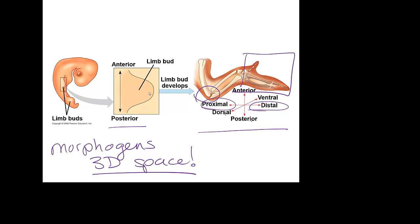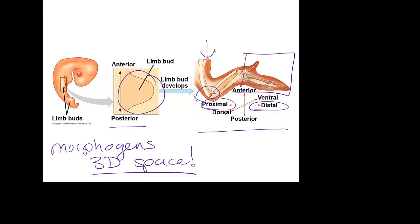What Sonic Hedgehog is going to focus on is actually this limb bud. Like in plants, we actually develop buds, where high concentrations of these morphogens are going to cause further development — in particular, the development of a limb. In the next session, we'll consider what overarching regulation is responsible for all of this.